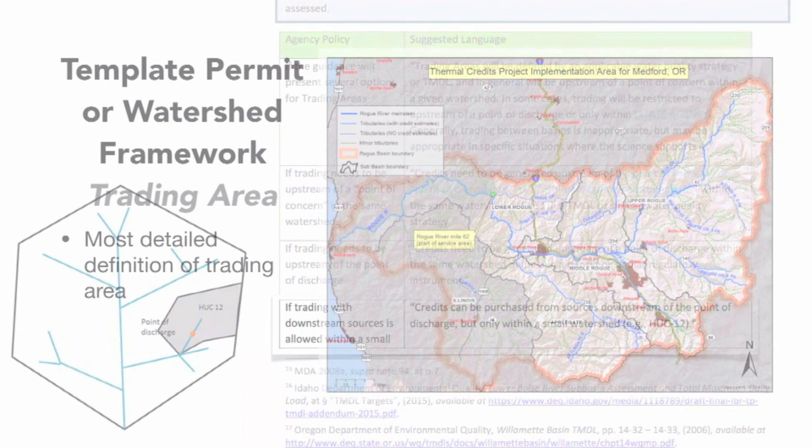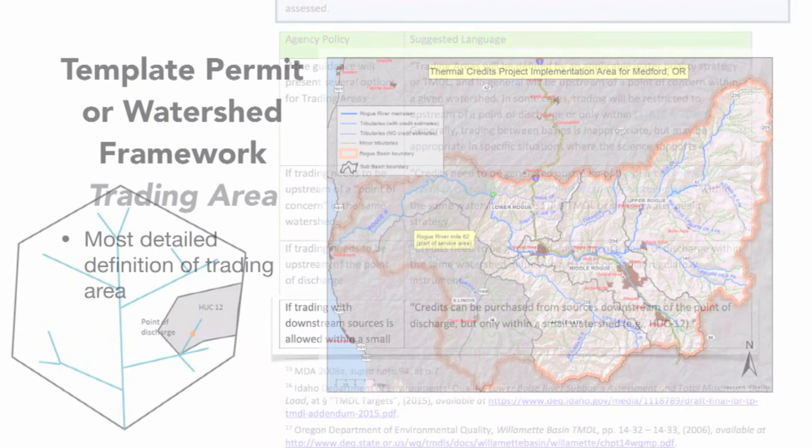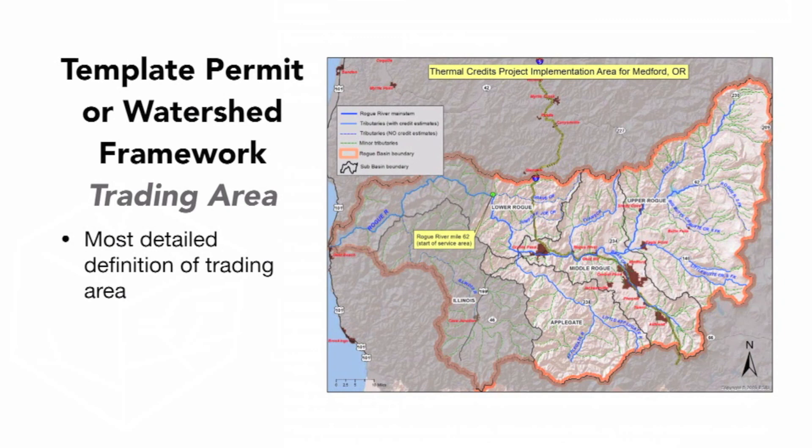The most detailed definition for a trading area is going to be in the watershed framework or the permit. The permit is the final enforceable regulatory instrument. A watershed framework sets those policies that are consistent at the watershed scale. In this case, a watershed framework and permit would have the same information: the final trading area map. For the City of Medford, Oregon, that's the watershed boundary for the Thermal Load TMDL.